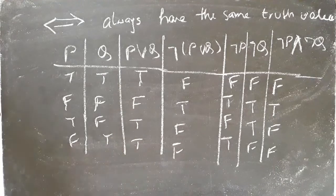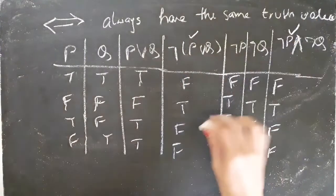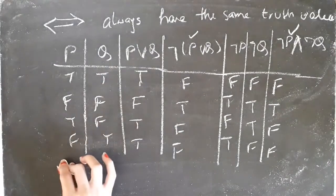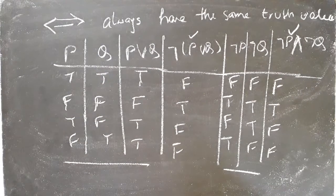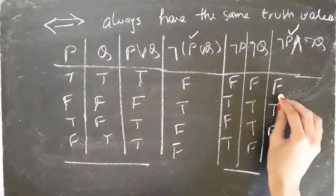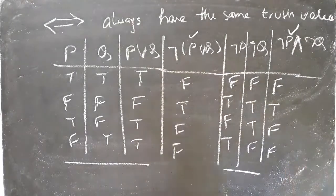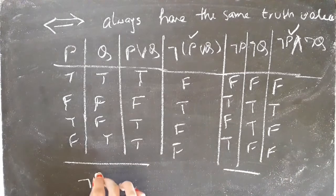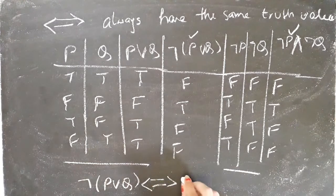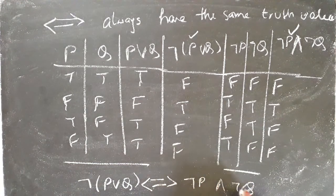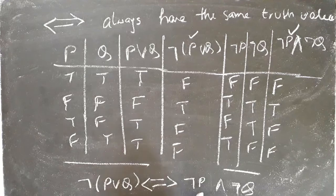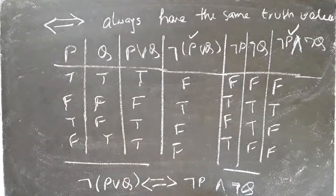We see that the truth values of NOT (P or Q) and (NOT P and NOT Q) are always the same — false together, true together, and false together in the last two cases. Thus, NOT (P or Q) is logically equivalent to NOT P and NOT Q. To prove logical equivalence, we make a truth table and show that the two statements always have the same truth value, no matter what be the truth value of their components.